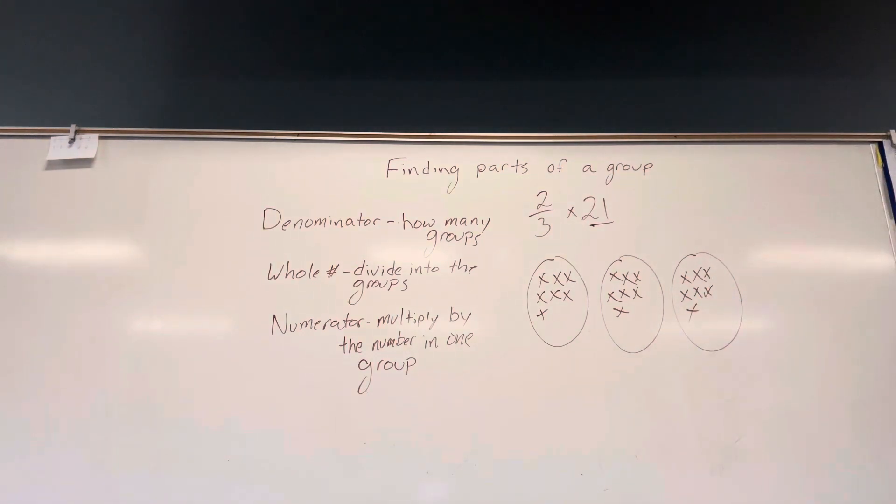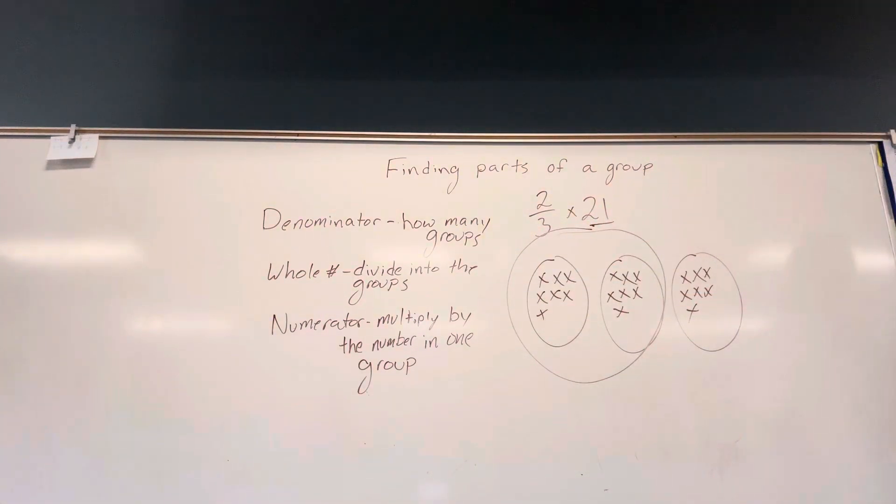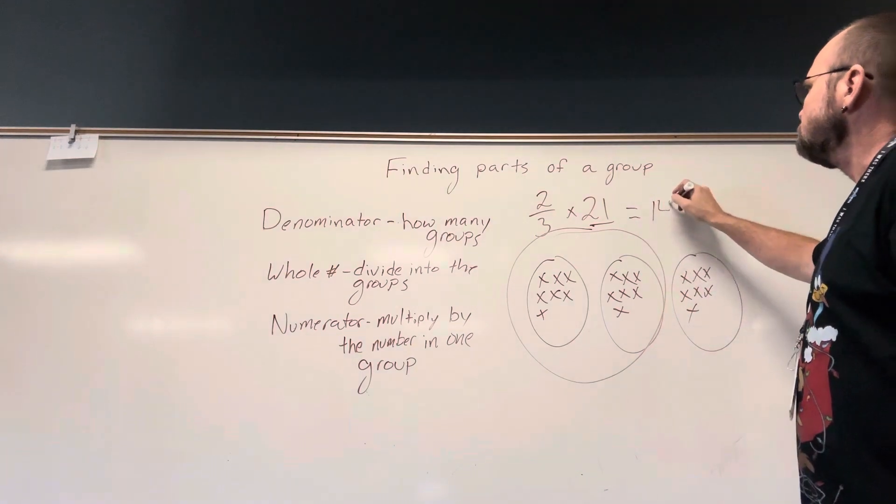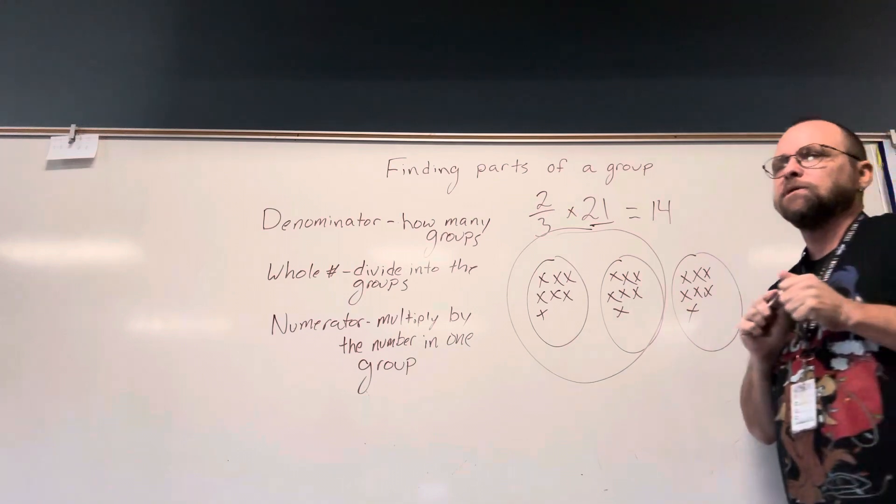And how many groups are we looking at? Two. And how many are in two groups? Fourteen. I get this now. Easy peasy, raw chicken squeezy.